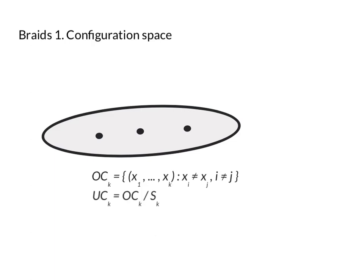So a braid is a path in the space of unordered configurations. You start with some collection of points and you move them around. Fortunately I can only move one at a time, and they come back to the same configuration, but maybe not in the same order. Maybe you've permuted them somehow.